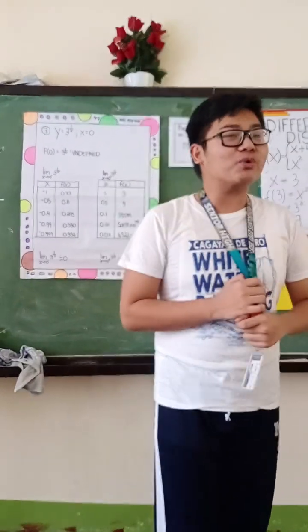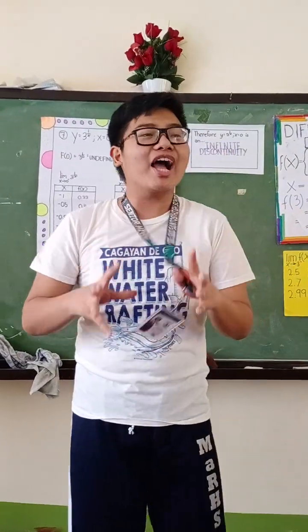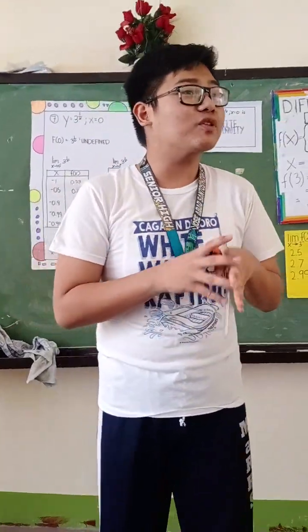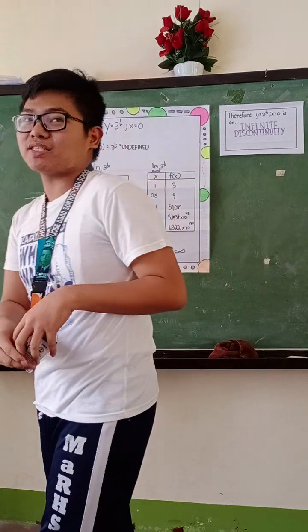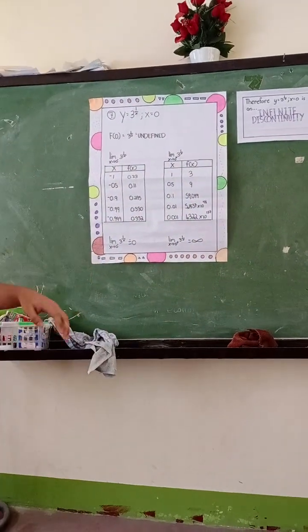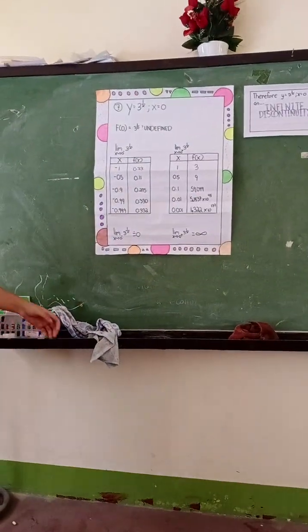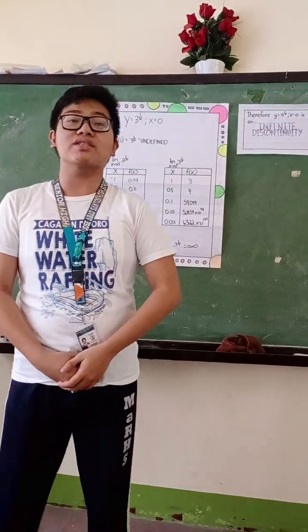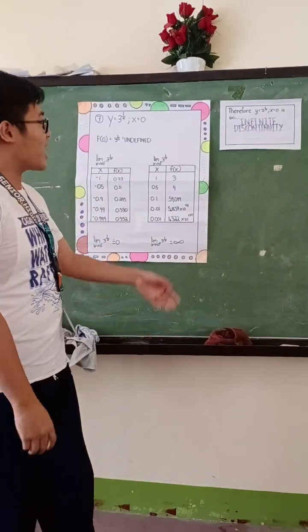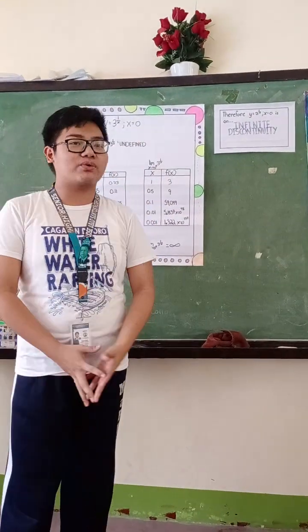Hey everyone, for today's video we're going to learn what type of discontinuity the given equation is. For number 7, we have y is equal to 3 raised to 1 over x, and x is equal to 0.